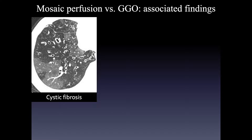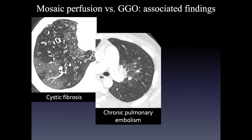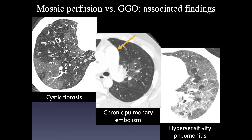Associated findings can be really helpful in predicting mosaic perfusion. In this patient with cystic fibrosis, airways inflammation and bronchiectasis are predominantly located in the lucent lung regions, suggesting the lucent lung is abnormal. Similarly, in pulmonary vascular diseases — this patient presented with pulmonary hypertension and an enlarged pulmonary artery — the heterogeneous lung attenuation represents mosaic perfusion as the abnormal lung. Mosaic perfusion can be seen with a wide variety of different findings, and those other findings may help narrow the differential diagnosis.